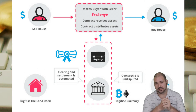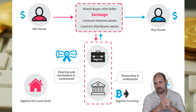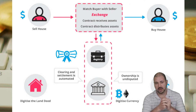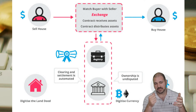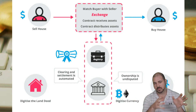Here's another example — buying or selling a house. You make a contract, receive assets, and the contract distributes assets. We use digital currencies to settle and clear it, and then the land deed goes to the person who bought it while the cryptocurrency goes to the person who sold it.